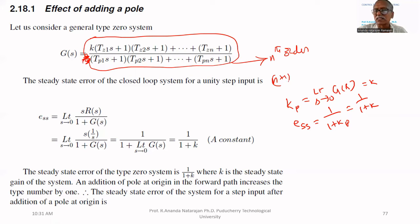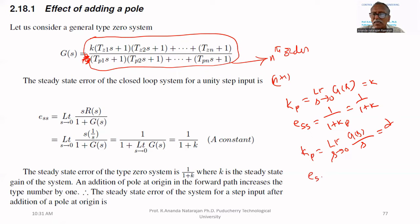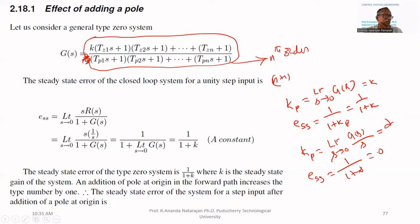Now let us add a pole at origin (add s to the denominator) to that system. kp becomes the limit as s tends to zero of G(s)/s, which becomes infinity because I added one pole at origin. Therefore, steady state error equals 1/(1+infinity), which equals zero. So steady state error becomes zero.